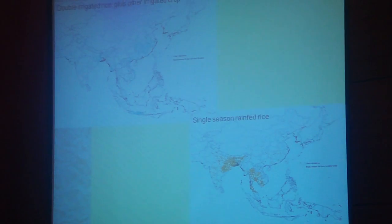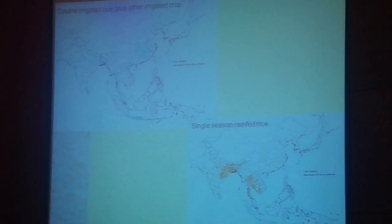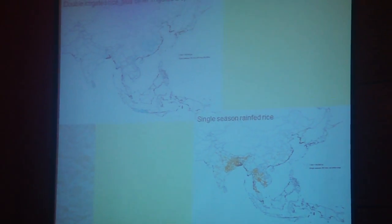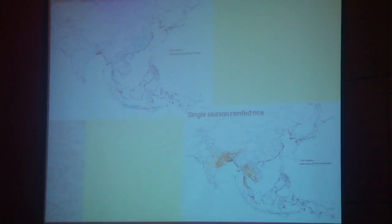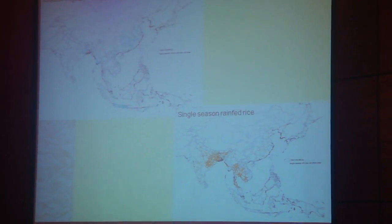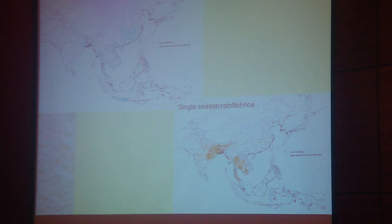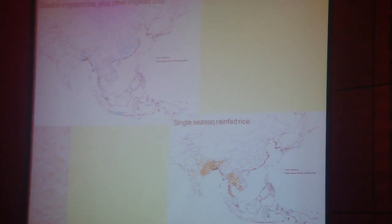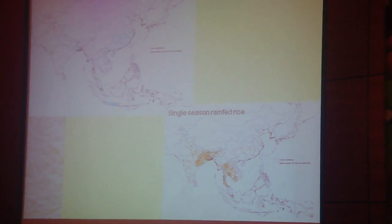Just to recall, these are the spatial maps available for these ecologies in South Asia, East Asia, and Southeast Asia.